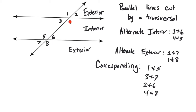We also need to talk about consecutive interior angles, or same side interior angles. Same side interior angles are going to be supplementary to each other, meaning they add up to 180. So within this, we have four and six, and three and five. Same side exterior angles — two and eight, and one and seven — are also supplementary, they add up to 180. Another example of supplementary angles is a linear pair. And we still have vertical pairs that are congruent to each other.